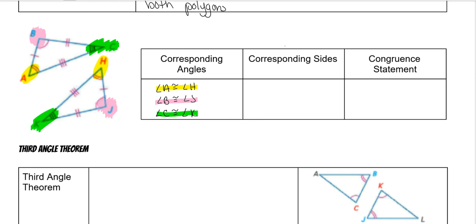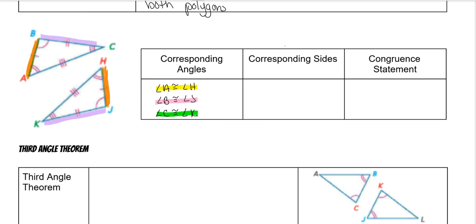Sides are going to work the same way — corresponding sides. On this one they're marked with tick marks. The one with one tick mark is congruent to the one with one tick mark. The one with two tick marks is congruent to the one with two tick marks. And the one with three tick marks is congruent to the one with three tick marks. Now how you name sides makes a difference. If I name it AB — AB went from blue to purple on the orange triangle — so on the other side it's got to go from blue to purple: HJ. It must be named that way or it will be wrong.